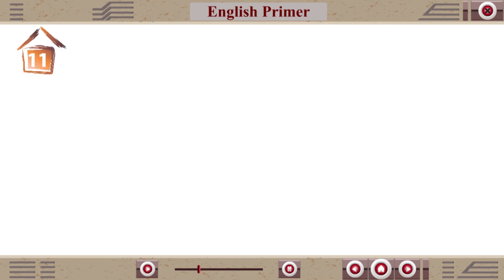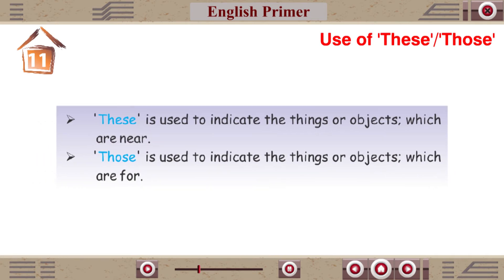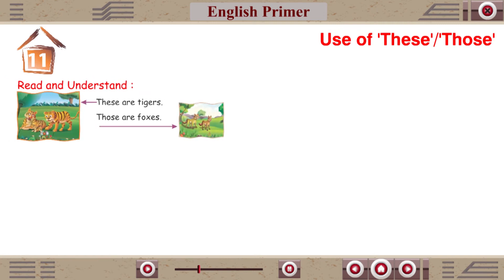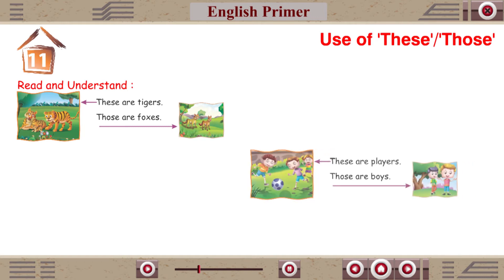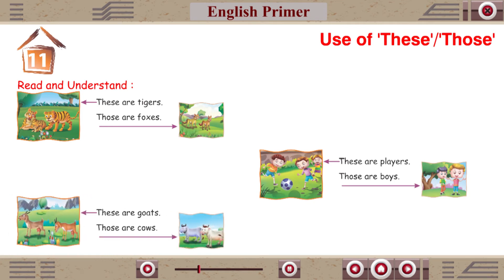Chapter 11: Use of These and Those. These is used to indicate things or objects which are near. Those is used to indicate things or objects which are far. Read and understand: These are tigers. Those are foxes. These are players. Those are boys. These are gods. Those are cows.